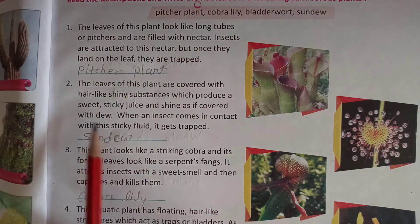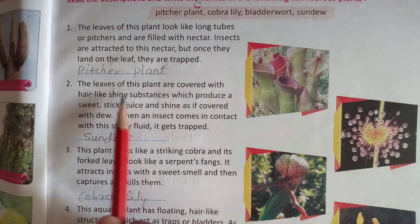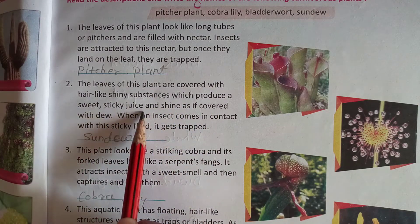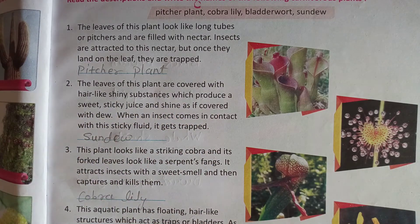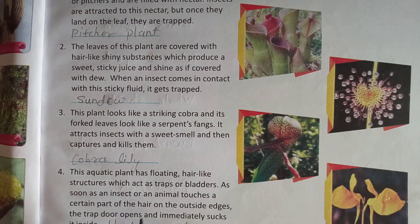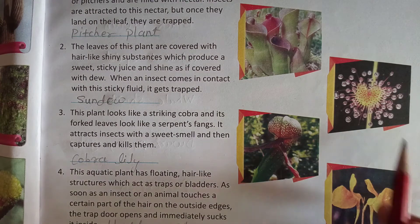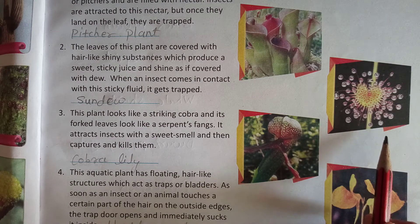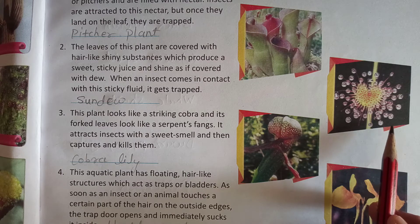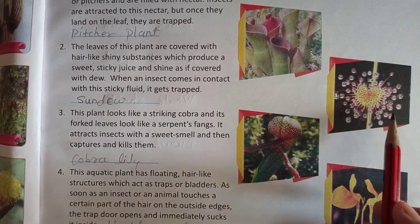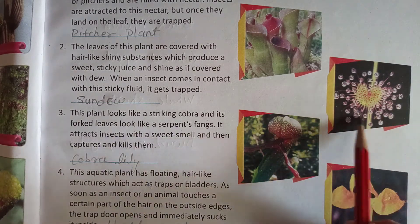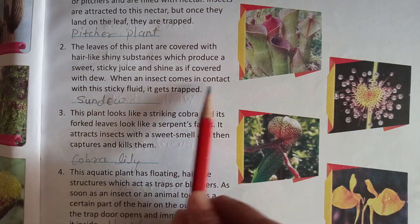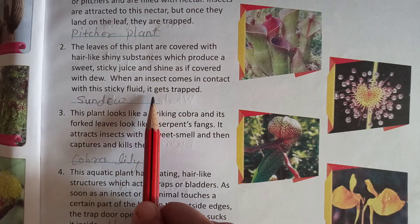The leaves of this plant are covered with hair-like shiny substance which produces sweet sticky juice and shines as if covered with dew. When an insect comes in contact with the sticky fluid, it gets trapped.